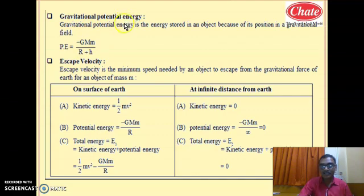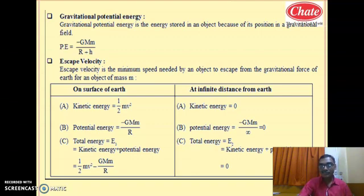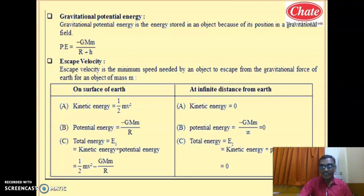Why is gravitational potential energy negative? Because at infinite height, height is very large, but in the formula mgh, g becomes zero when height is infinity. So potential energy becomes zero at maximum height. At all lower, considerable heights the potential energy is less than zero — hence gravitational potential energy at all our considerable heights is negative.